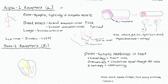Our best alpha-1 agonist is phenylephrine, which is a pure alpha-1 agonist. Norepinephrine is also an extremely good alpha-1 agonist, but it also has beta activity.